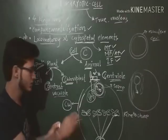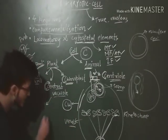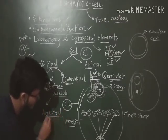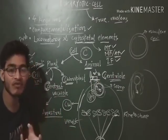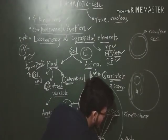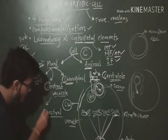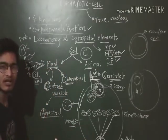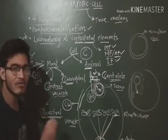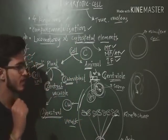No plant has centrioles. In case of plants, cell division is called anastral — because the aster formation is absent in plants, it is anastral, meaning the centriole is absent in the plant cell. But centrioles are present in the animal cell.